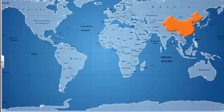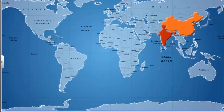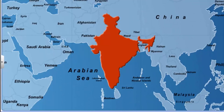China recorded the worst famine from 1958 to 1961 in the history of the world, with a toll of more than three crore. Whereas India, in spite of worse economic conditions, did not have such an acute famine. Economists think it was because the government's policies in India were different.